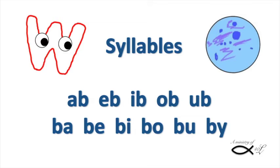Syllables that end in a consonant are short: ab, eb, ib, ob, ob. If they end in a vowel, they're long — they say their name, except Y says the sound of I: bay, be, bi, bo, boo, by.